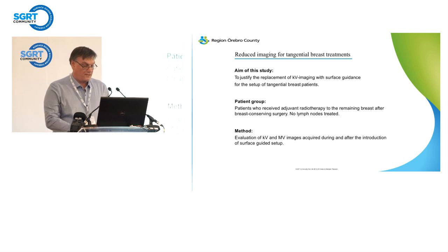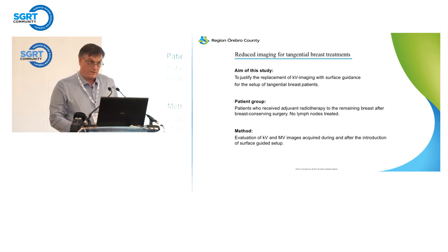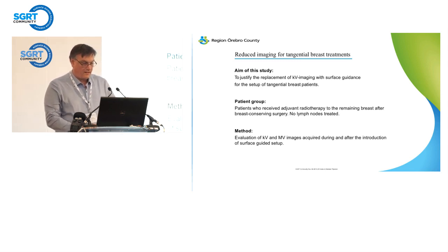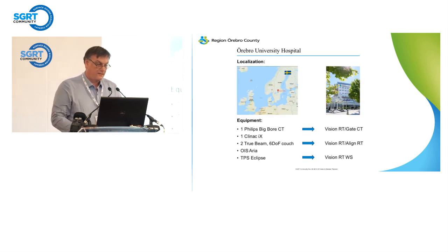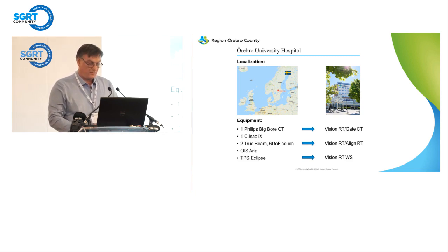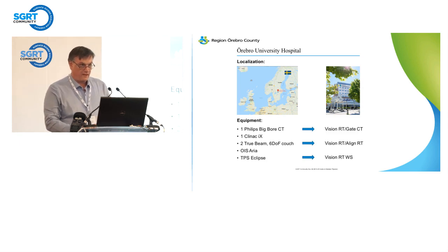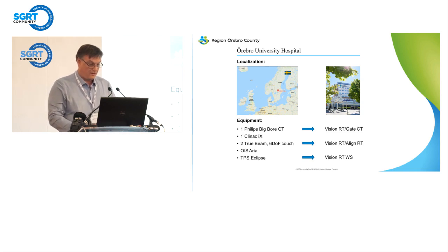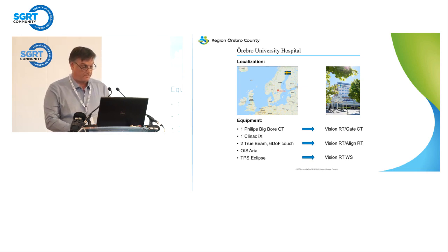We have been evaluating our KV and MV images acquired during and after the introduction of our surface guidance. This is to briefly describe our hospital's equipment. We are working in an integrated Varian environment. We have two TrueBeam Linacs, one Clinac, a Philips BigBore CT, and we work with Aria and Eclipse. The VisionRT equipment we have is a GateCT system at the Philips CT and AlignRT systems at our two TrueBeams. We also have some extra VisionRT workstations.